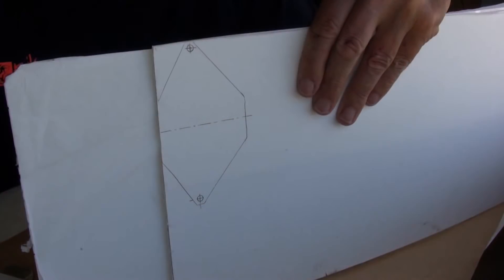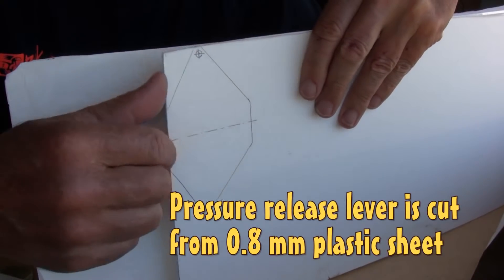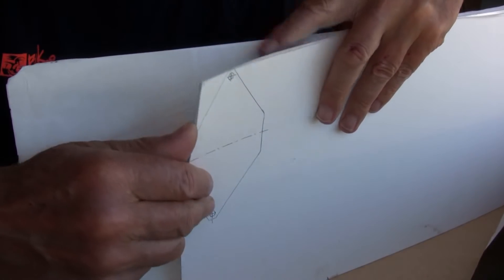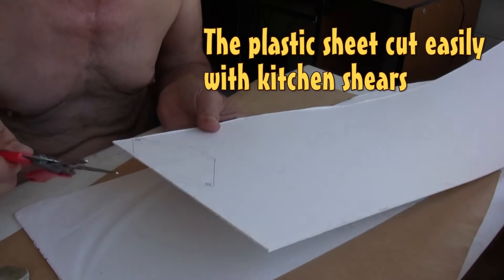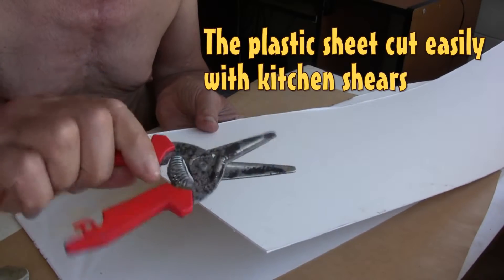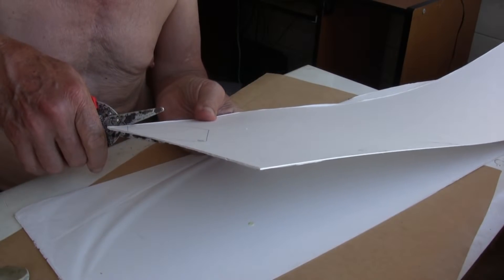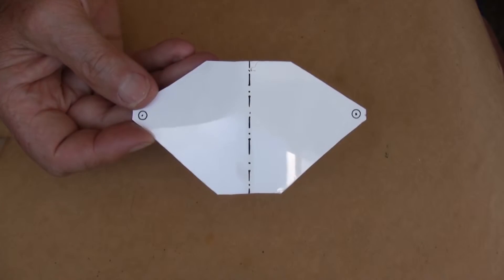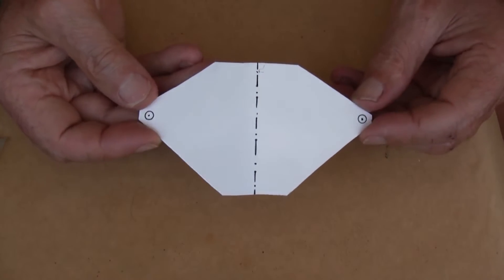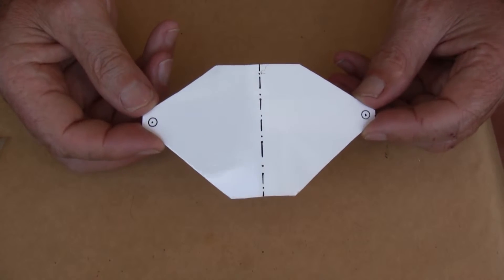I've used the template to draw around and mark this sheet of plastic. This plastic cuts easily with these shears. Here's a plastic piece cut and marked.